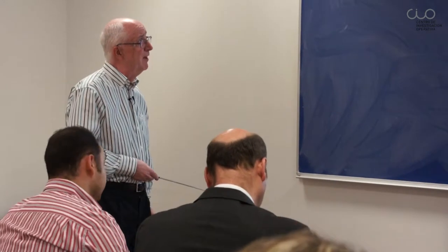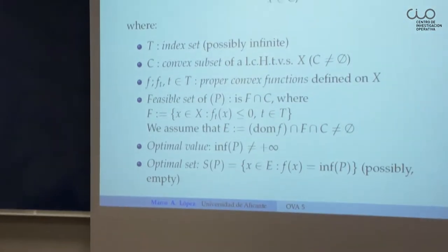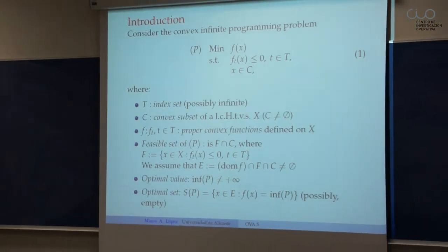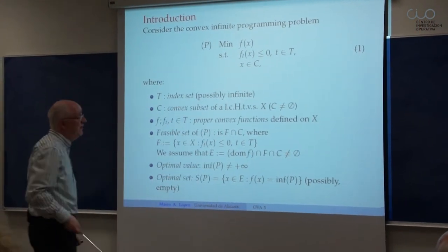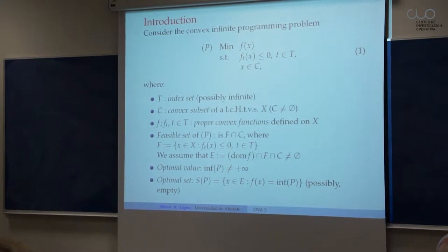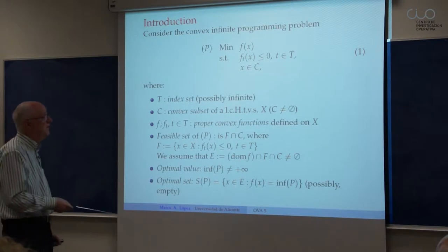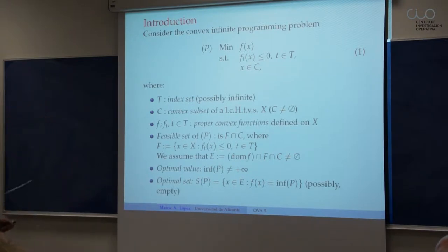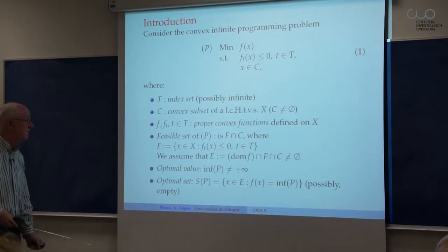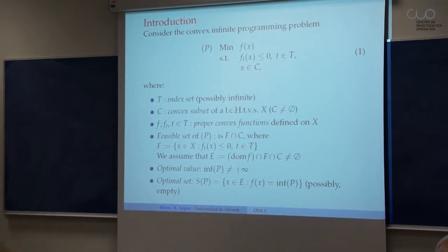My object is this convex infinite programming problem. I have to minimize an objective function f of x, subject to in principle infinitely many inequality constraints indexed by a set of small t living in capital T, which has no structure — it is just a general set. Aside these standard constraints, I have another one called the abstract constraint: x must belong to a set capital C, which is a convex subset of a locally convex Hausdorff topological vector space.